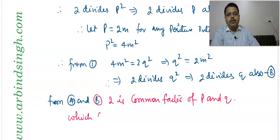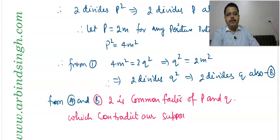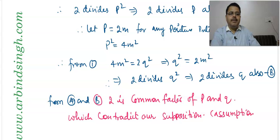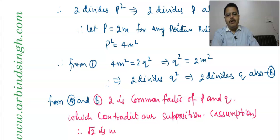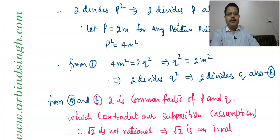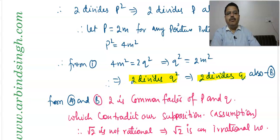From both results (a) and (b), 2 is a common factor of p and q, which contradicts our supposition that p and q are co-prime. Since our assumption that root 2 is rational leads to a contradiction, root 2 is not rational — therefore root 2 is an irrational number. Similarly, root 5 can be proved irrational in the same way.